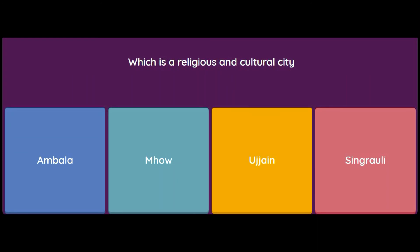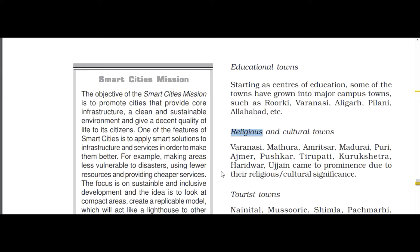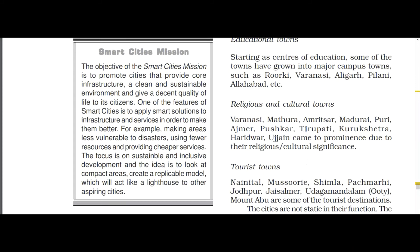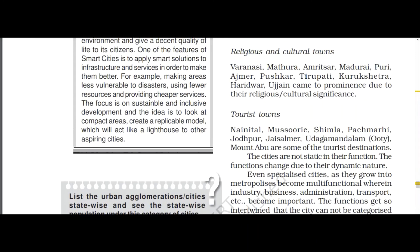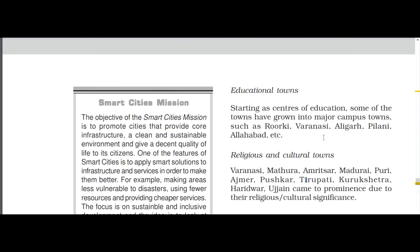Which is a religious and cultural city — Ambala, Mao, Ujjain, or Singh Rauli? The answer is Ujjain. Towns are classified on the basis of educational, religious or cultural, or tourist functions. Religious towns include Varanasi, Mathura, Amritsar, Madurai, Puri, Ajmer, Pushkar, Tirupati, Kurukshetra, Haridwar, and Ujjain. Tourist towns include Nainital, Mussoorie, and Shimla. Educational towns — places with IITs and major universities — include Roorkee, Varanasi, Aligarh, Pilani, and Allahabad.